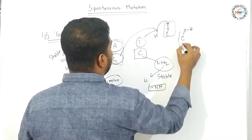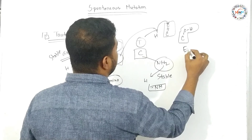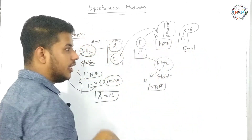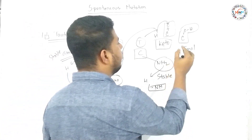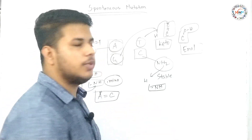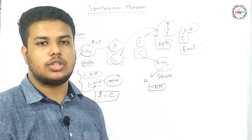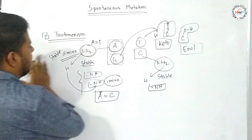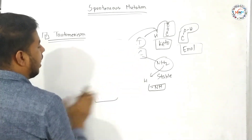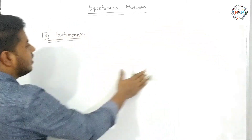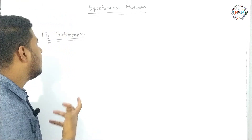This is the enol formation. It is stable in the keto form, but when the hydrogen atom is in the enol form, it is in the unstable form. So the nitrogenous base changes from amino to enol formation. This formation is tautomerism.